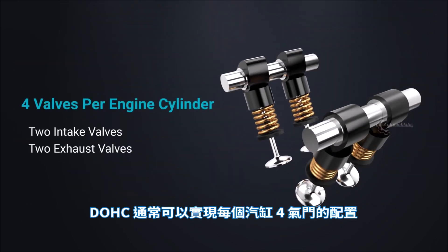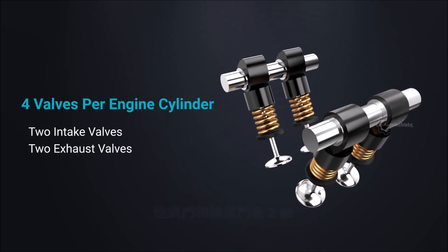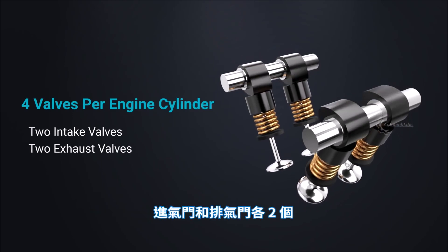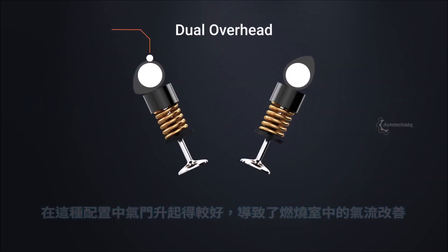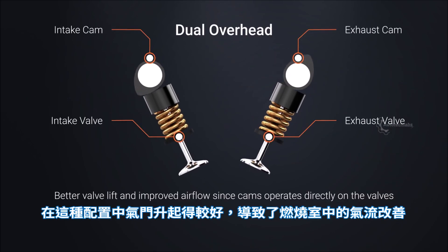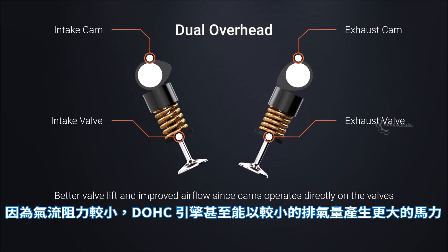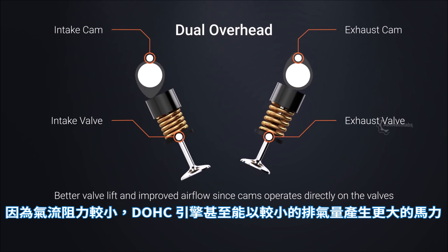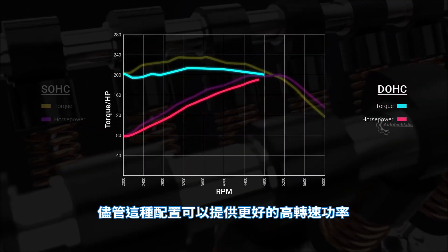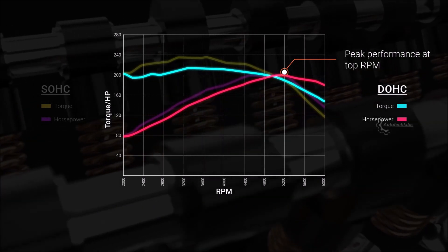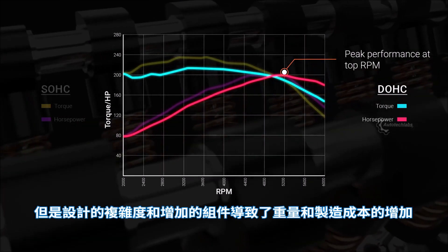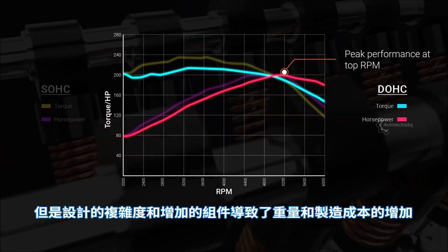DOHC usually implements a four valve per cylinder configuration — two valves for intake and two for exhaust. This configuration has better valve lift, resulting in improved airflow through the combustion chamber. With less airflow restriction, the DOHC is even capable of generating more horsepower out of smaller displacement. Though this configuration can provide better top-end power, the design complexity and increased components result in more weight and a higher cost of production.